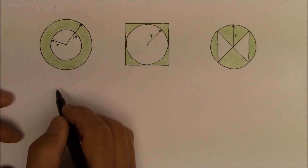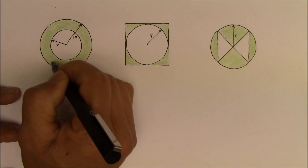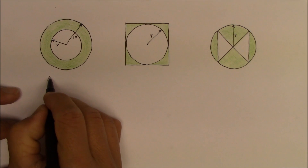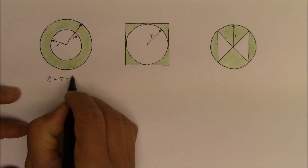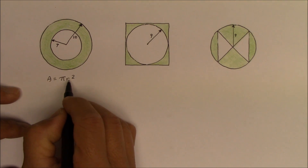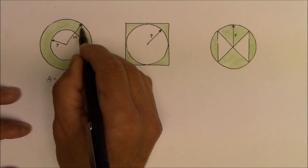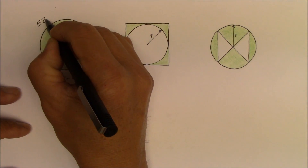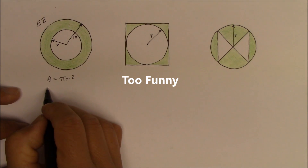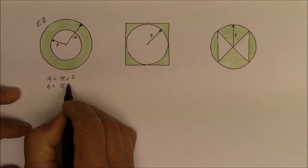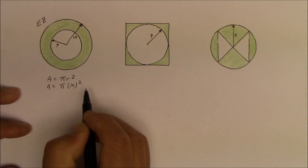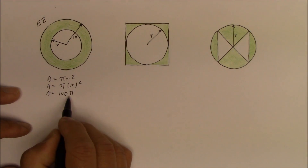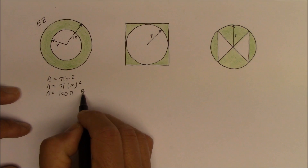Alright, so this is the way I would do it. First, I would find the area of the total circle — the biggest one. As you know, the area formula for a circle is pi r squared. All you need is the radius, and it is given, so this is easy — E-Z. Area equals pi times 10 squared, which gives us 100 pi. I'm going to leave it at that for now.